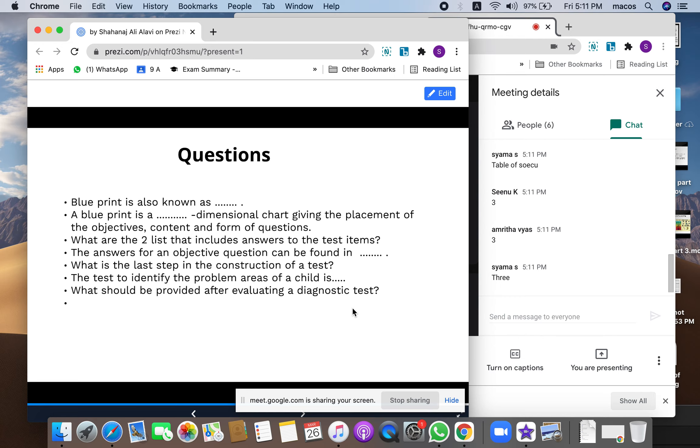Yes, three dimensional - that is objectives, content, and form of questions. Then what are the two lists that include answers to the test items? Marking scheme and scoring key. Yes, this list gives us the idea or the clues to the marking or the allotting of marks to that specific question. Marking scheme and scoring key.